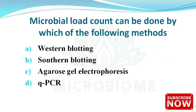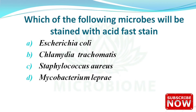Next: microbial load count can be done by which of the following methods? The options are western blotting, southern blotting, agarose gel electrophoresis, and qPCR. The right answer is option D — qPCR.